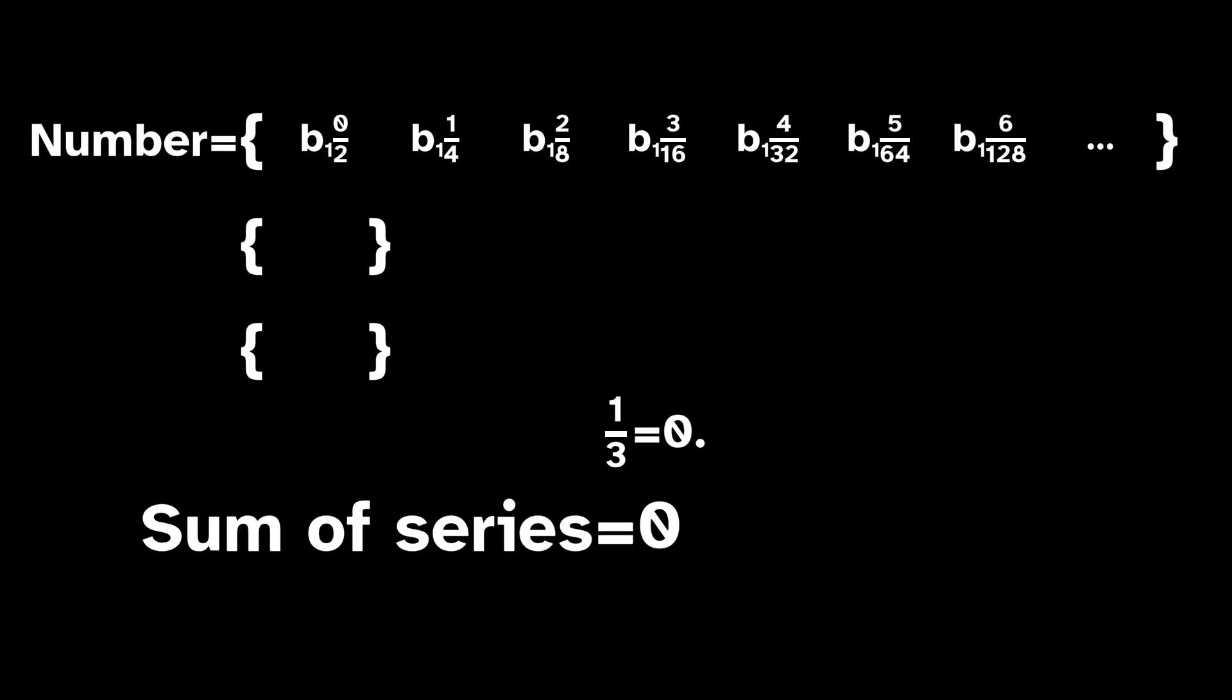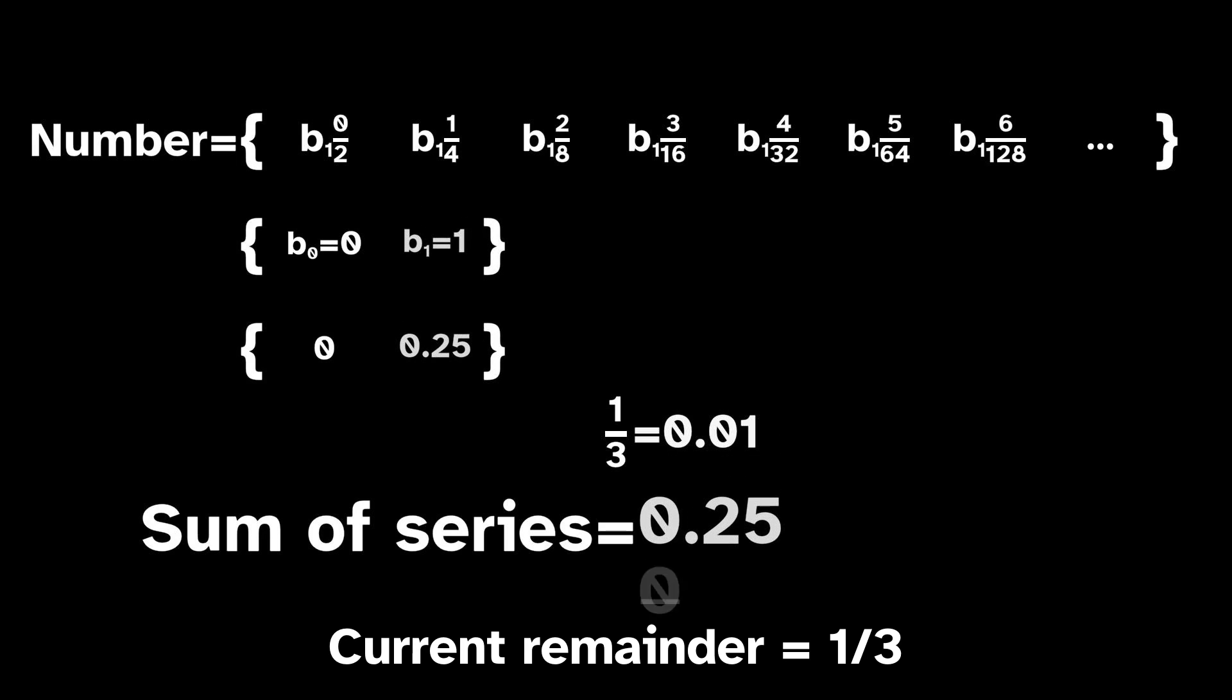All of this becomes clear if we look at this system in base 2. Let's look at 1 third, for instance. Because 1 third is less than 1 half, the first binary digit in its base 2 expansion after the decimal point is 0. And because 1 third is greater than 1 quarter, the second binary digit is 1.